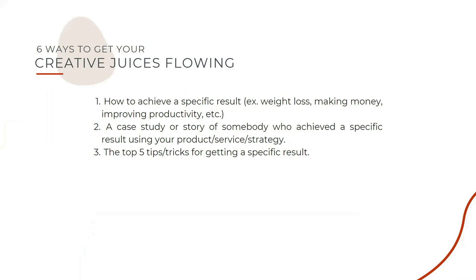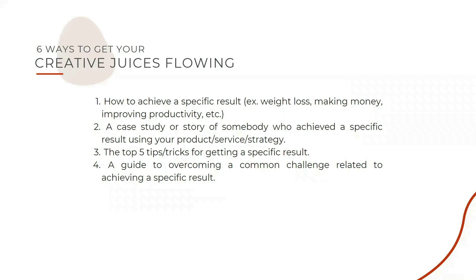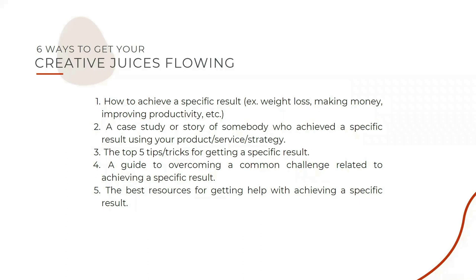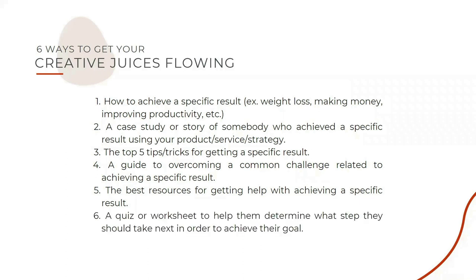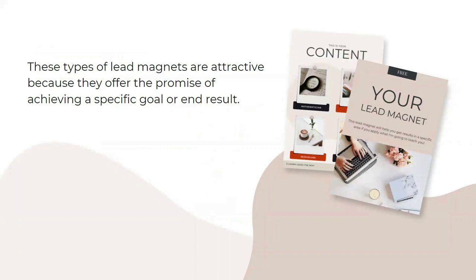Number three, maybe you have your top five tips or tricks for getting a specific result. Number four, maybe you can put together a guide to overcoming a common challenge related to achieving that specific goal or result. Number five, you can put together the best resources for getting help with achieving a specific goal. And number six, you can put together a quiz or maybe even a worksheet to help them determine what steps they need to take to achieve that specific goal or result. These are the type of lead magnets that are attractive because they offer the promise of achieving a specific goal or end result.